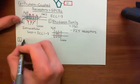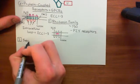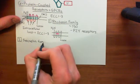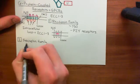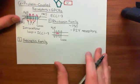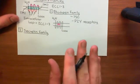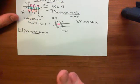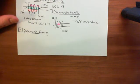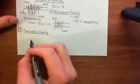The second family of G-protein coupled receptors is known as the secretin family. The characteristic feature that these receptors all share is that their ligand is generally a peptide ligand — a protein rather than a small molecule. More importantly, this ligand binds in a wedge between the extracellular amino terminal domain and the transmembrane domain.